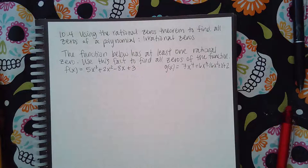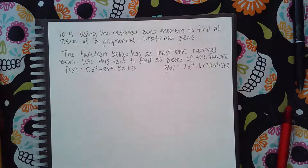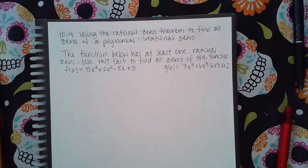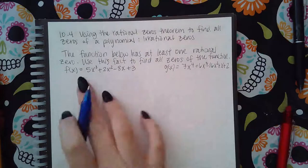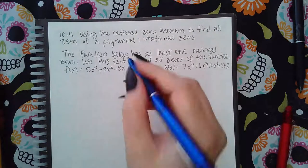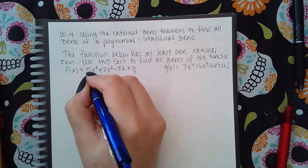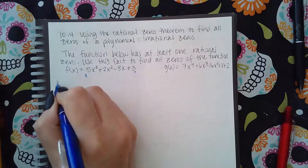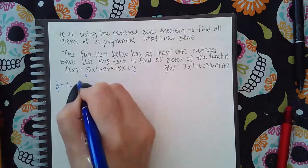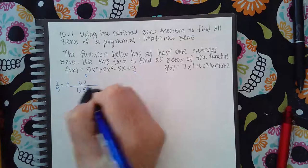Here we have 10.4, using the Rational Zeros Theorem to find all zeros of a polynomial — this one contains irrational zeros. The function has at least one rational zero, so we use that fact to find all the zeros. This is already in descending order, so my p's come from the constant term and my q's from the leading coefficient. So p over q is plus or minus 1 and 3 over 1 and 5.